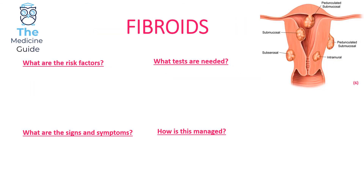Fibroids are benign smooth muscle tumours of the uterus. If you look at the picture in the top right-hand corner, fibroids can present in many ways: they may be pedunculated, submucosal, subserous, intramural, or pedunculated submucosal.